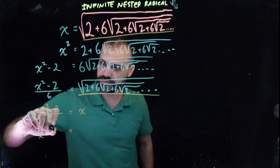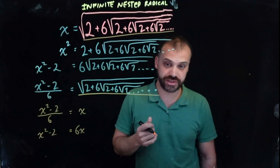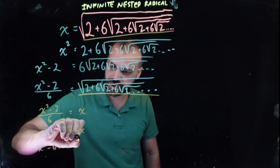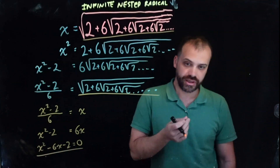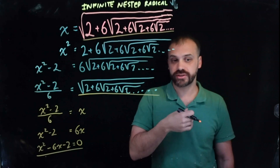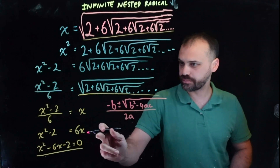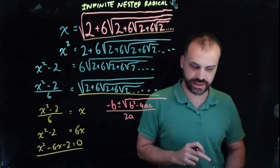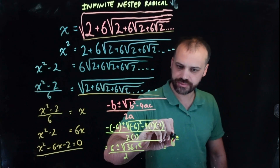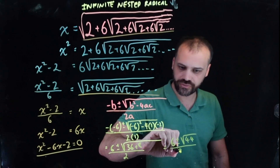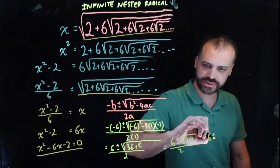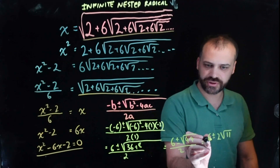x squared minus 2 over 6 equals x, which means x squared minus 2 equals 6x — just multiplying both sides by 6. Rearranging: x squared minus 6x minus 2 equals 0. What we have here is a quadratic. Depending on where you are in your mathematical education, you can solve it using the quadratic formula or completing the square. Plugging in the a, b, and c values, simplifying, we get 6 plus or minus the square root of 44 over 2, which further simplifies to 6 plus or minus 2 root 11 over 2.